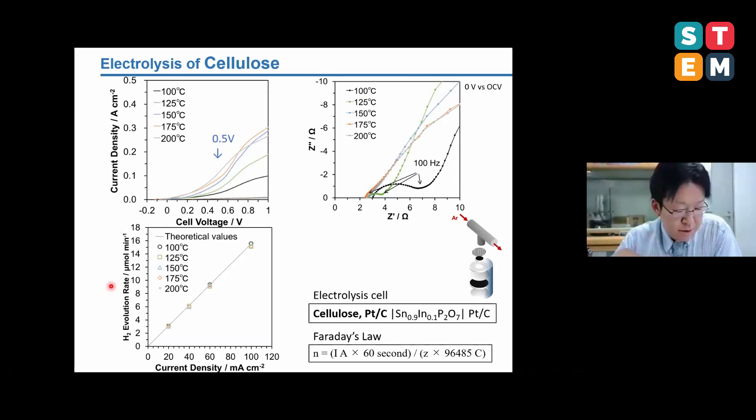These are the results of the electrochemical measurement. Electrolysis performance is shown in this figure. When we used platinum carbon electrode, the electrolysis started around 0.5 volts, and the IV curve slope was improved according to the operating temperature. The impedance spectra had the same trend. The obtained hydrogen evolution rate was compared with the theoretical values calculated from Faraday's law. The obtained values were almost equal to the theoretical values as shown in this figure.